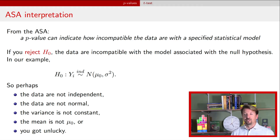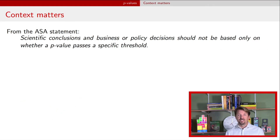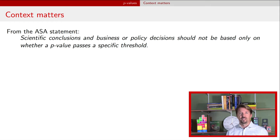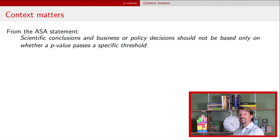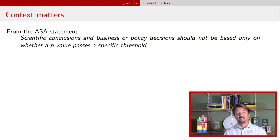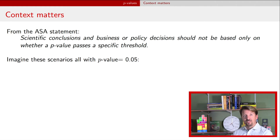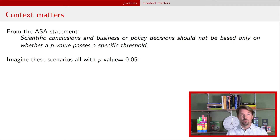There are modeling concerns, but there are other concerns too. The American Statistical Association also stated — I'll put a link below to their full statement — that scientific conclusions and business or policy decisions should not be based only on whether a p-value passes a specific threshold. This goes against the standard approach of: if p-value is less than the significance level, reject the null. So why did the ASA say this? Let's think about situations where we get a p-value of 0.05, or just slightly below 0.05, such that we could reject the null at a standard 0.05 threshold.